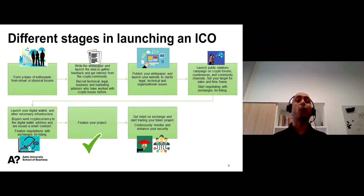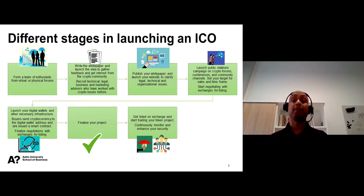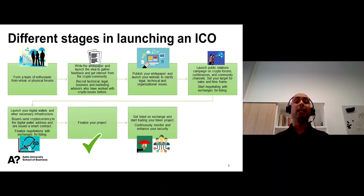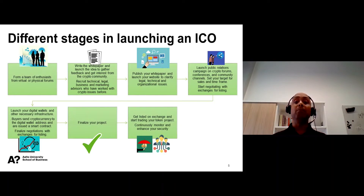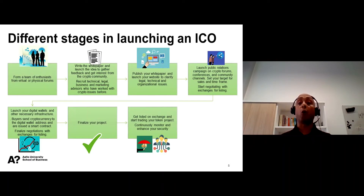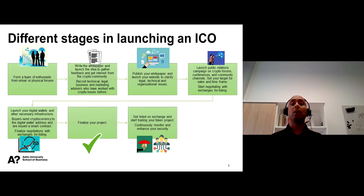Once a team is formed, the second most important task is to brainstorm ideas and write down a draft white paper. The white paper elaborates in detail the business model, team, and functioning of the future project. At this juncture, it is very essential to get formal and informal advice from technical, legal, marketing, and business advisors who have experience with the launch of ICOs.